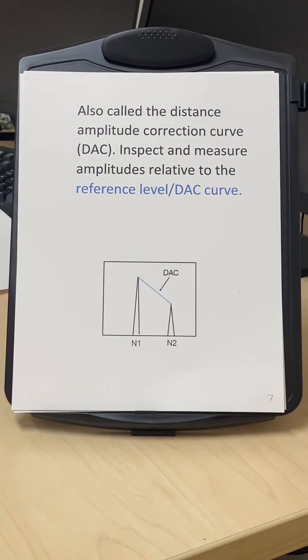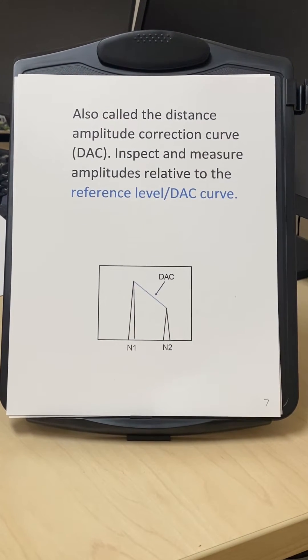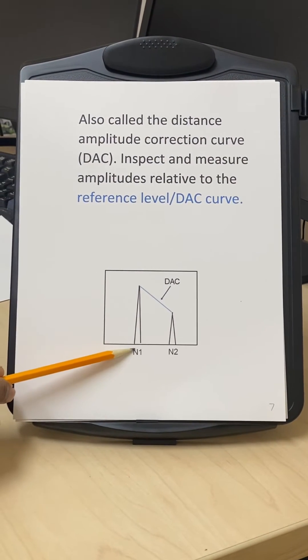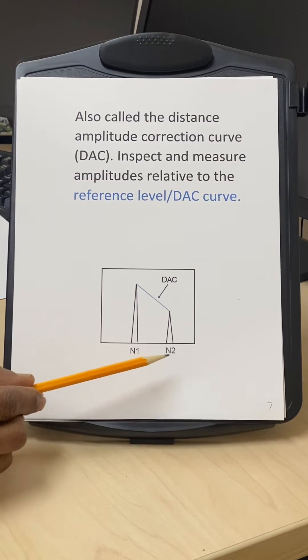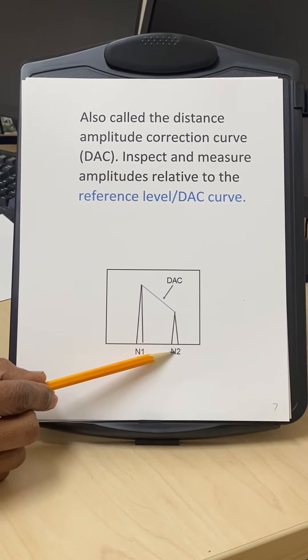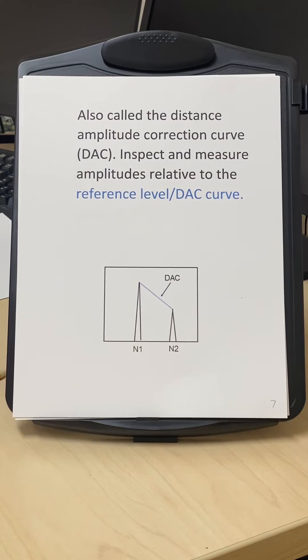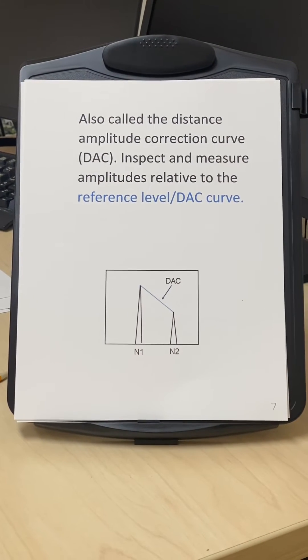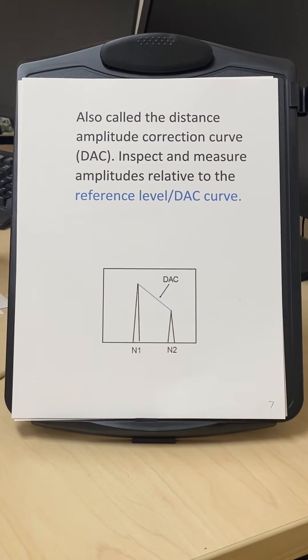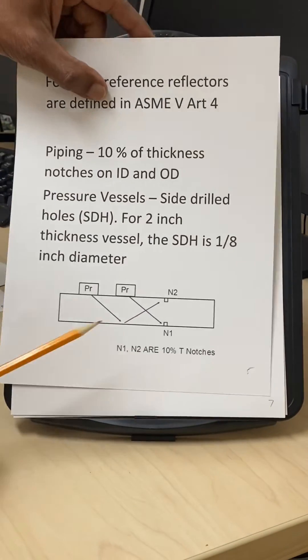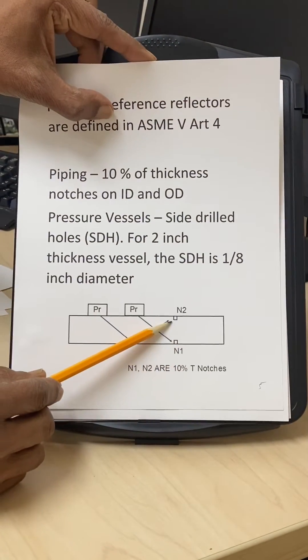The steps in ultrasonic testing: identify the applicable acceptance criteria, identify the reference reflectors (in this case the 10% ID and OD notches for piping inspection), obtain the calibration block with the reference reflectors. For conventional UT, we measure the amplitude from the reference reflector, 10% ID and OD notches, and then we connect the peaks and this is the reference level.